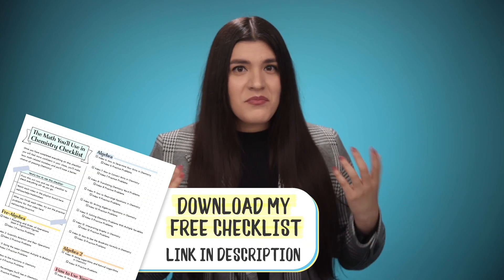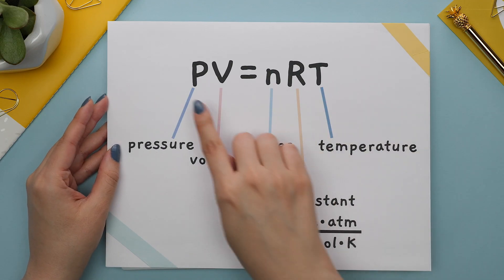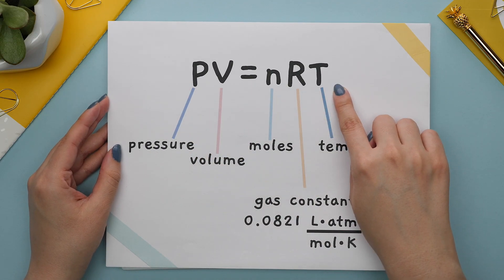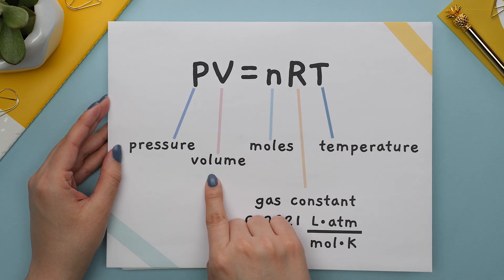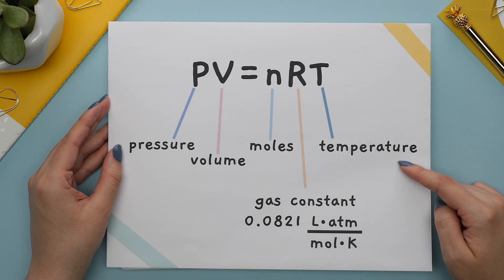The next example is on gas laws, and this time you have two unknown variables that are not the same. The formula we will be using for this example is the ideal gas law, which is pressure times volume set equal to moles times a known gas constant times temperature.